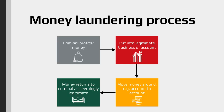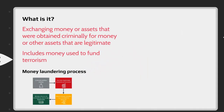Finally, we move on to the green square, which is integration. This is when the money goes back to the criminals and now looks like it's from a legitimate source — perhaps from the sale of assets or property. That's a brief look at the money laundering process.